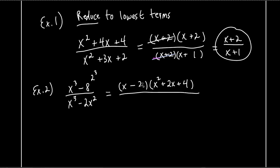At first it looks really hard, but once you learn the pattern it's not too bad. Now let's look at the bottom: x³ - 2x². Is there anything in common? An x². Factor out an x² and you're left with x(x - 2). We had to factor in order to reduce — in order to cancel stuff out, we needed to turn this into factors so things are being multiplied together.